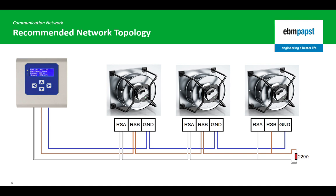Stub or star networks with one central connection to the controller are not recommended. At each end of the network, there should be a termination resistor fitted to dissipate the energy of the signals passing through it. This is usually included in the communication circuit of the client controller, and requires the customer to ensure that a similar value resistor is installed at the end of the network at the last server device.